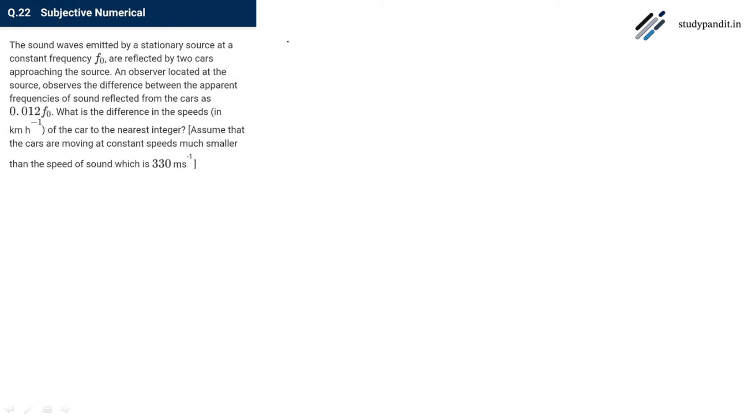What is the difference in the speeds of the car to the nearest integer? Assume that the cars are moving at constant speeds much smaller than the speed of the sound which is 330 meter per second.